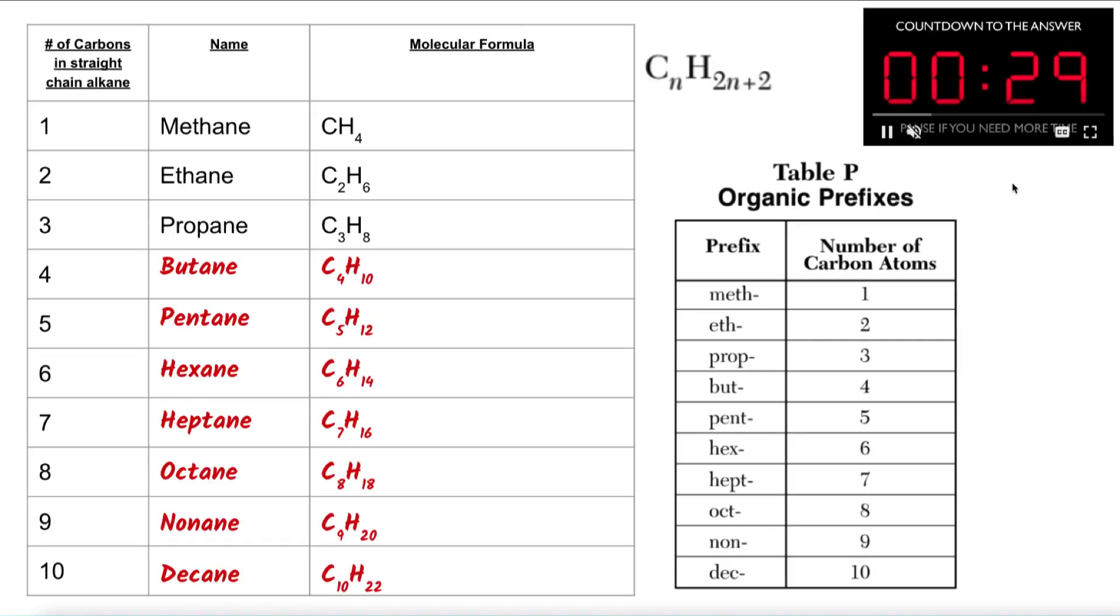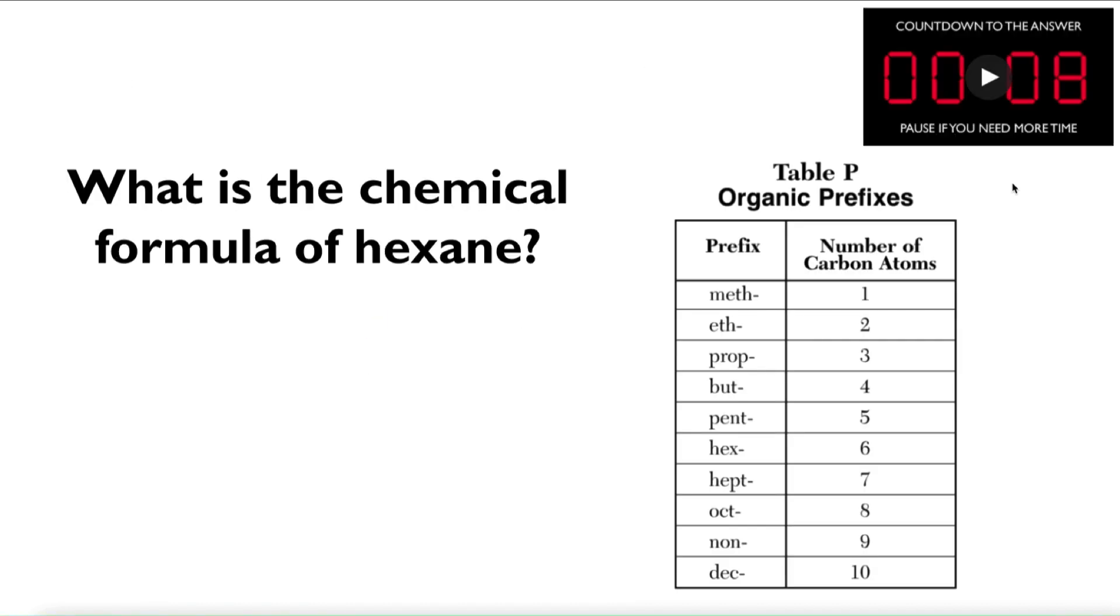We're going to try another practice problem. So without looking back at that table that you just filled in, we're going to not memorize these names. We're going to try and reason them out using our table P here. What would the chemical formula be of hexane? And here's that formula there for you from table Q.